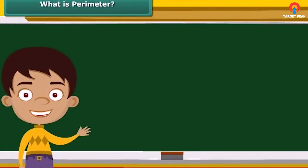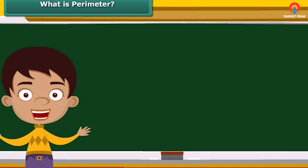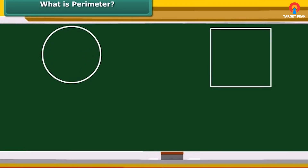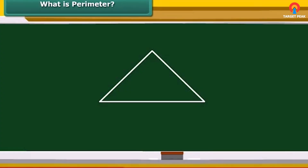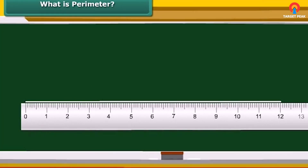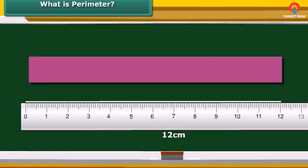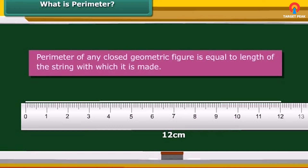Here is a simple technique for measuring the perimeter of a shape. Take a closed geometric shape — such as a circle, square, triangle, or rectangle — made of string. Untie the string and measure its length. The length of the string is the perimeter of the chosen geometric shape. We can generalize by saying that the perimeter of any closed geometric figure is equal to the length of the string with which it is made.